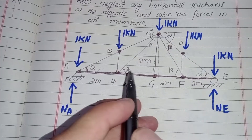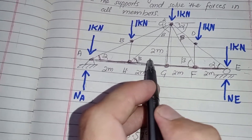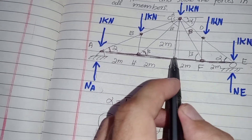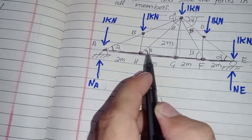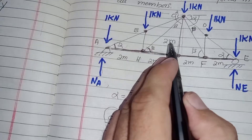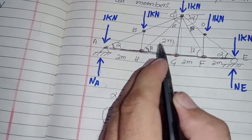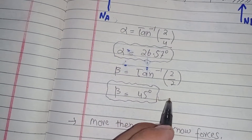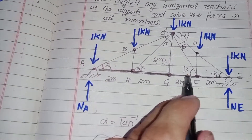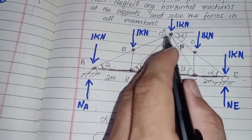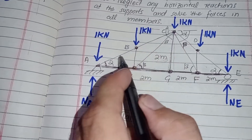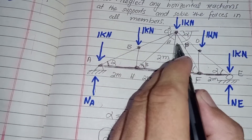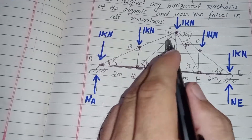This is a symmetrical truss — symmetrical by loading and by shape. If I cut it at midpoint, the left side is equal to the right side, so if this is alpha, this will also be alpha. Let's say this is beta. Tangent beta equals opposite side 2 meters divided by adjacent side 2 meters, so beta equals tangent inverse of 2 divided by 2, which gives beta equals 45 degrees. If this is beta, this will also be beta. Alpha makes the angle with the x-axis, and beta makes its angle with the x-axis.